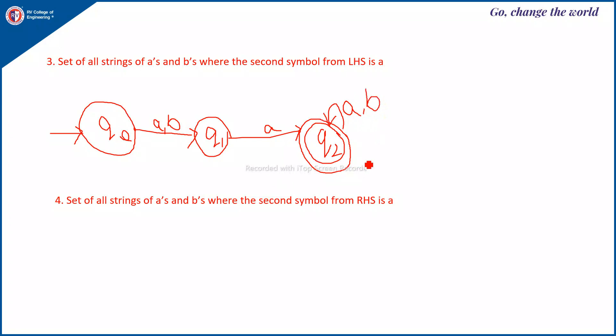This is the machine, and you have to conclude by writing all the parameters: Q = {Q0, Q1, Q2}, sigma = {A, B}, transition function delta as in the transition diagram, and F = {Q2}. Likewise you have to write all five parameters whenever it is a construction problem either for NFA or DFA.